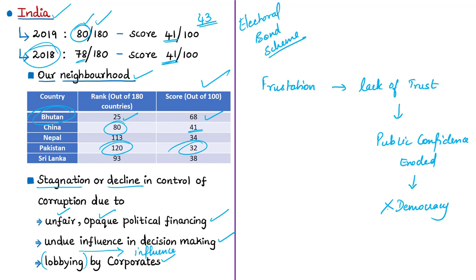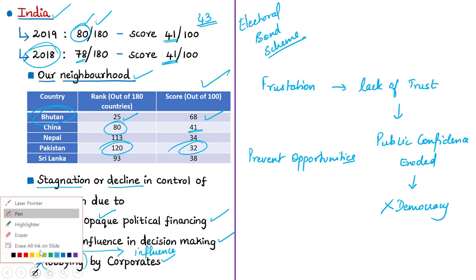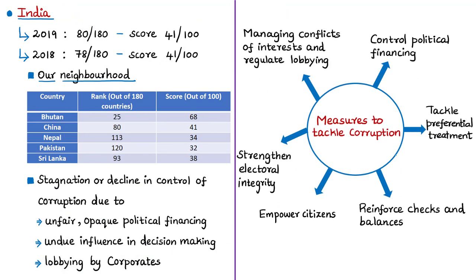Transparency International provides two dimensions to end corruption and restore trust in politics: first, to prevent opportunities for political corruption; and second, to foster the integrity of political systems. In the CPI 2019, Transparency International made several recommendations for tackling public corruption. The first recommendation is managing conflicts of interests and regulating lobbying activities, ensuring that government policy making is transparent, not under undue influence, and consulting a wider range of groups rather than restricting to few private interests.